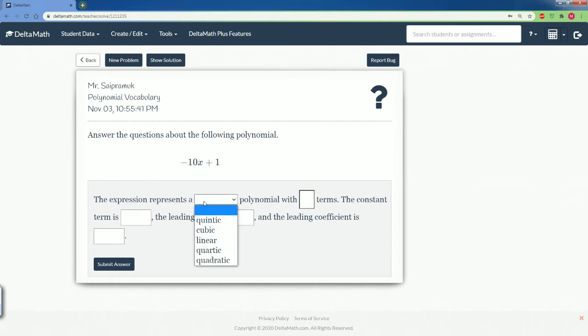The following represents a polynomial to the first power, so this is linear. So this is to the first power, x to the first power. And it has how many terms? 1, 2, 2 terms.